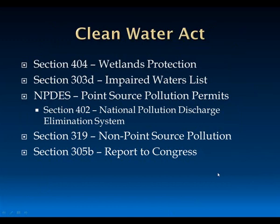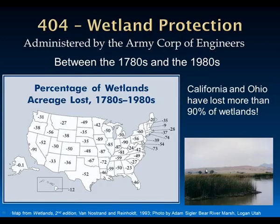The Clean Water Act has five sections important for us to know: Section 404 on wetlands, the impaired water bodies list, point sources, non-point sources, and the synthesis report to Congress. Section 404, or wetland protection, is administered by the Army Corps of Engineers, so permits are required for filling of wetlands. This map depicts the percent loss of wetlands between the 1780s and the 1980s—staggering losses across the United States, with California and Ohio having lost more than 90% of their wetlands.